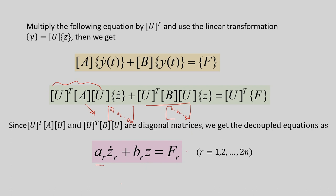Each decoupled equation is a first-order equation and easier to solve compared to a second-order equation. In a second-order system with damping, the impulse response function contains both exponential and harmonic terms, which complicates the integration process. But for the first-order system, the integration is much simpler.